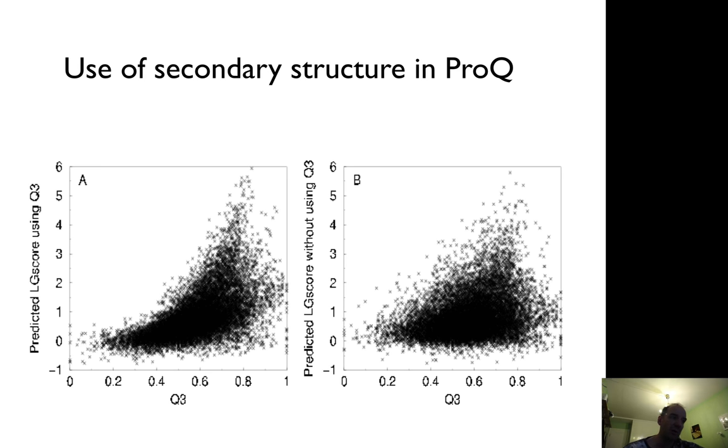So if you add this information to the neural network, you see here to the left, these models are predicted to be very bad. So basically, by having this agreement, you can tune the prediction. If you add many things together, you can actually get good performance.